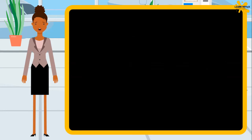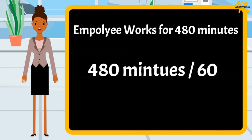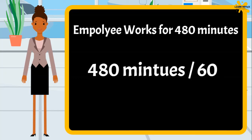Now, if my employees work for 480 minutes daily, how much will that be in hours? You need to divide 480 minutes by 60, and we get 8 hours.